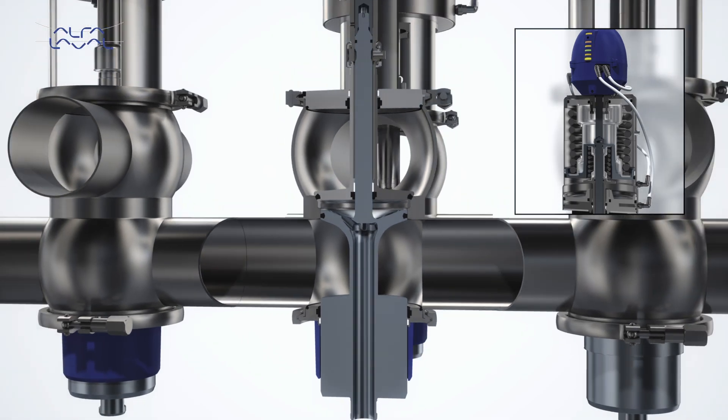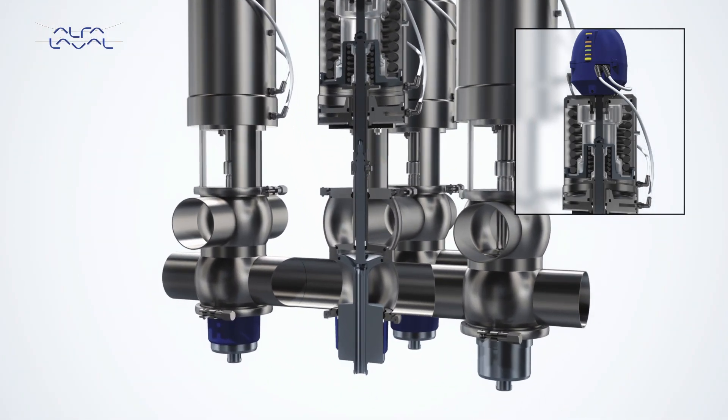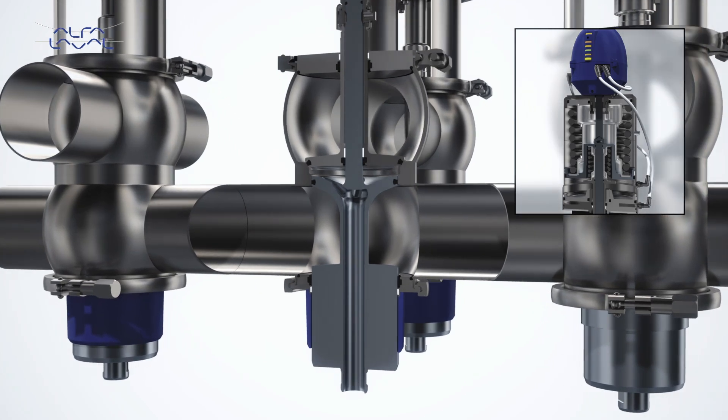With a unique mix-proof valve, you get double block and bleed functionality in one compact valve. In the event of plug seal failure, leakage will be visible at the bottom of the valve.